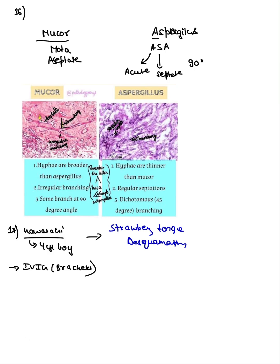One of the most repeated questions: how to differentiate Mucor and Aspergillus on histopathology. Mucor mnemonic — M for Motor, meaning aseptate hyphae, branching at 90 degrees. Aspergillus: 'A' means acute angle branching, less than 45 degrees, and septate hyphae. Simple.